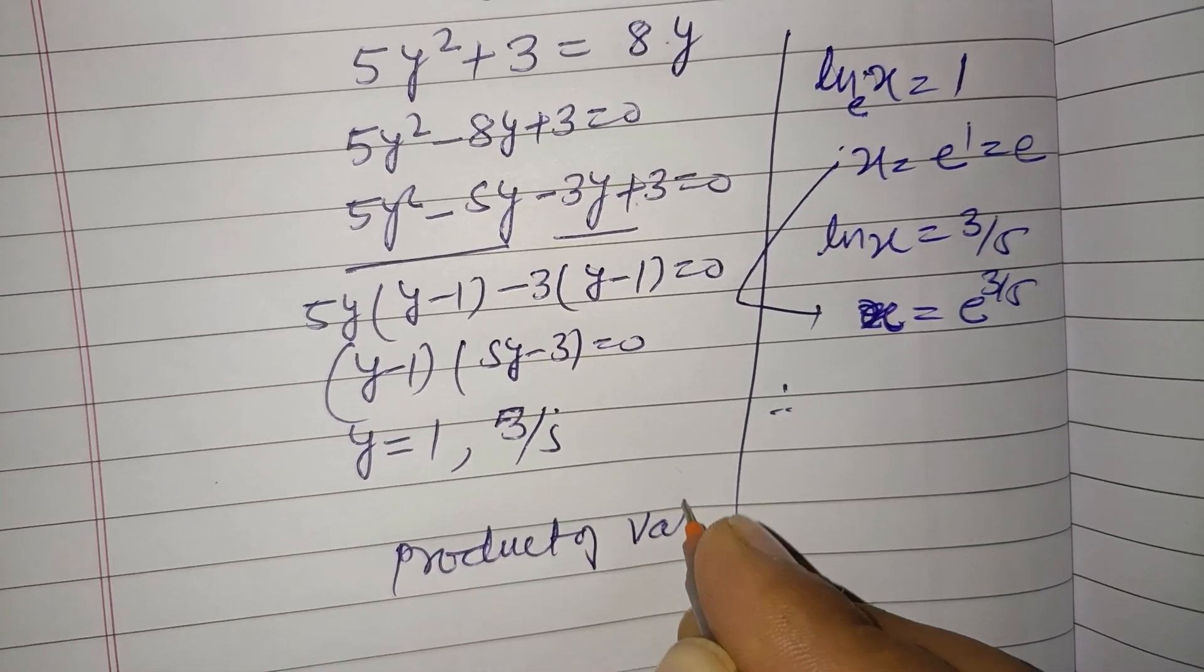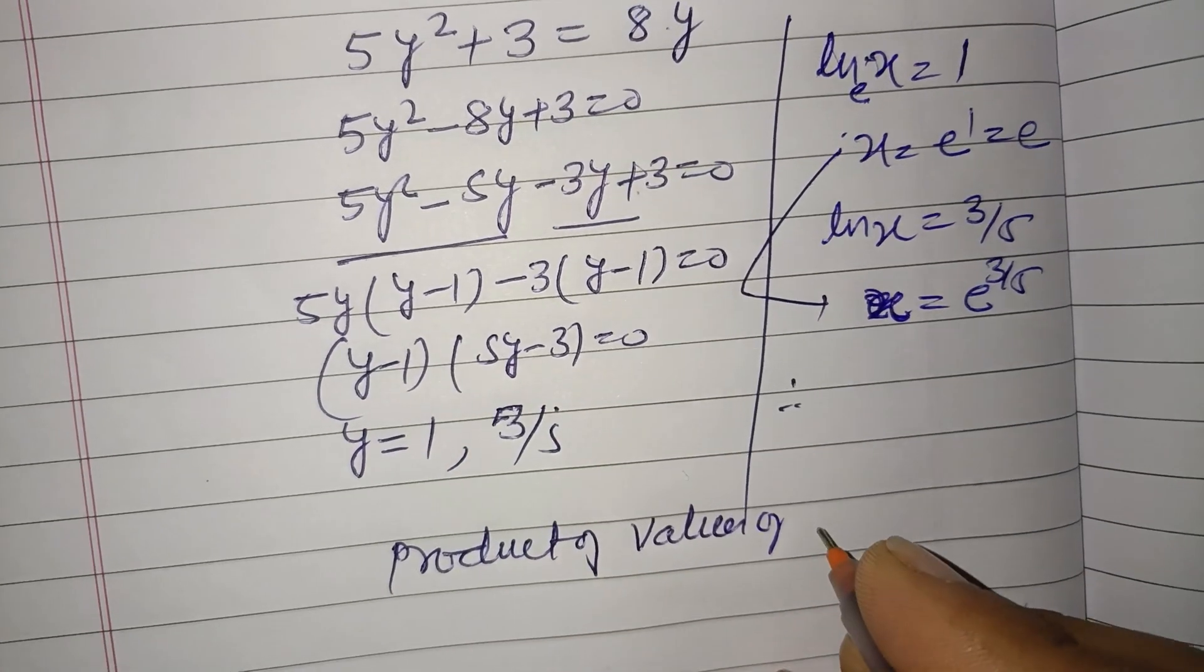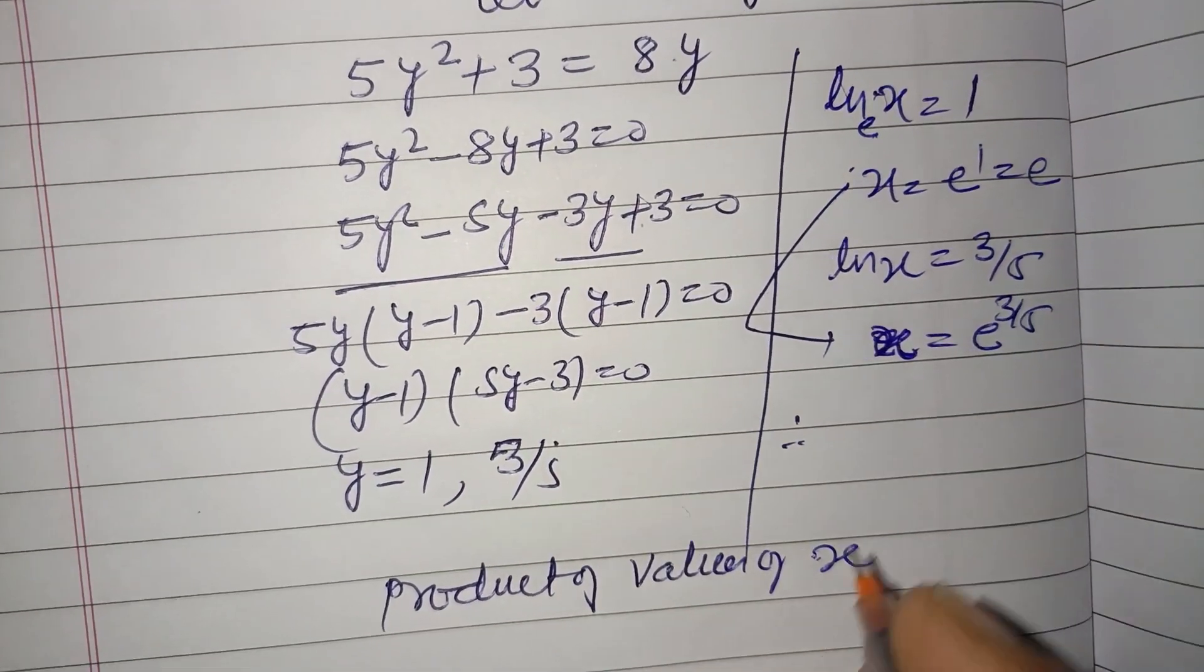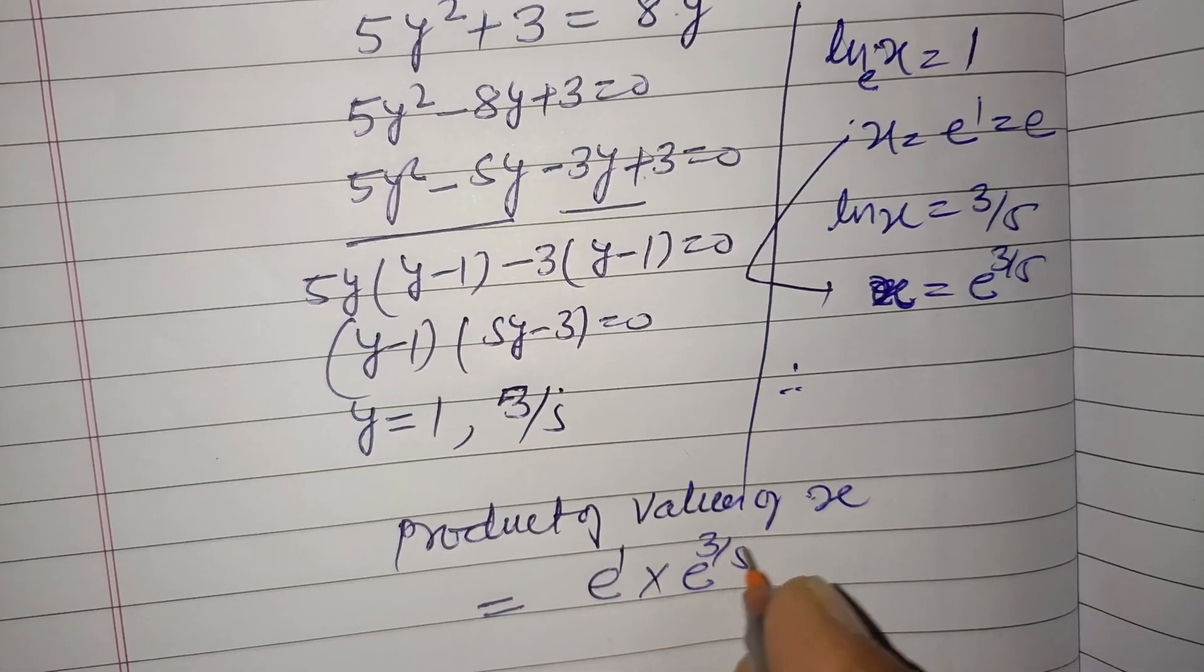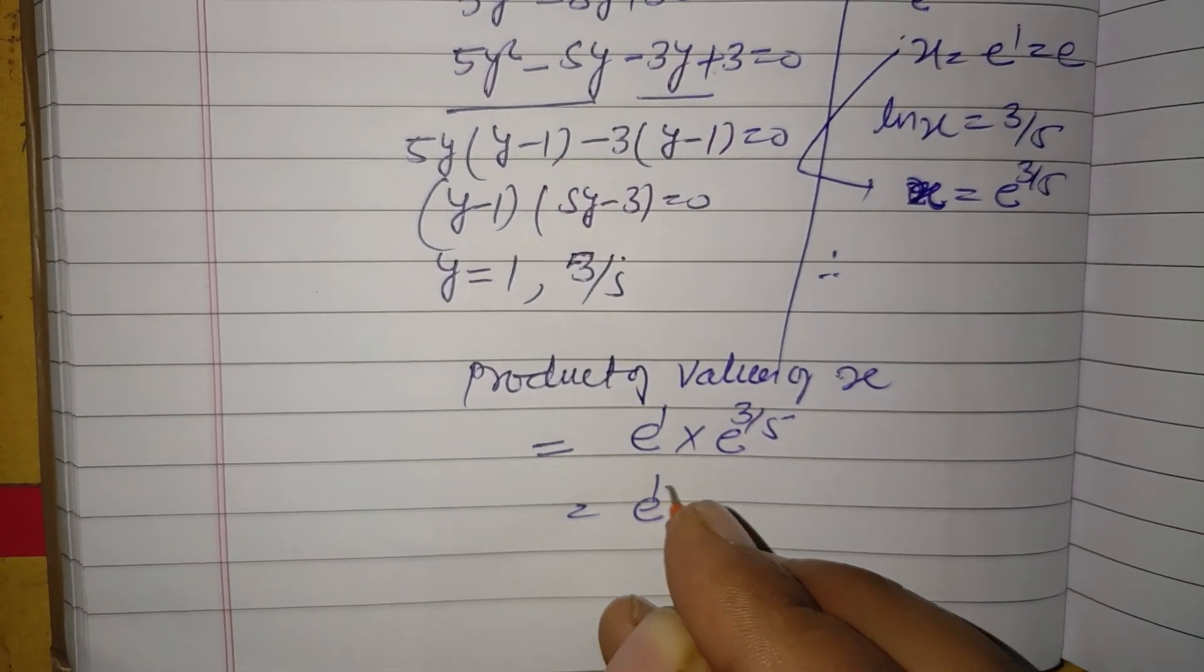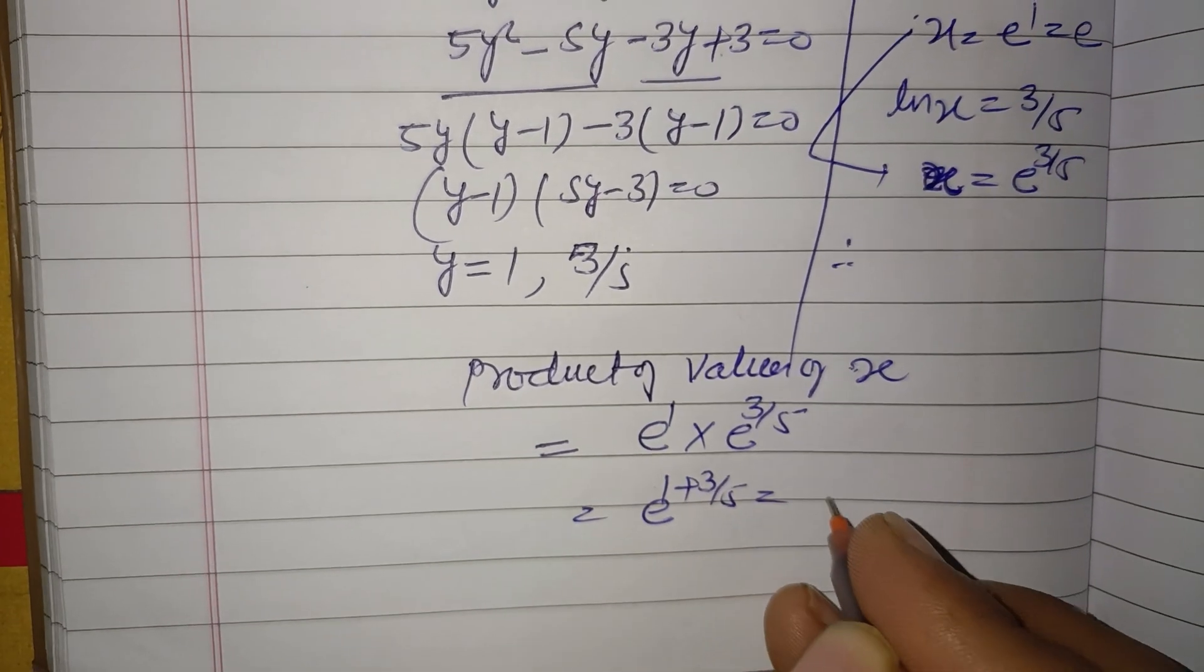Product of values of x, these are real values. So this is e to the power 1 and e to the power 3/5, so e to the power 1 plus 3/5, that is e to the power 8/5.